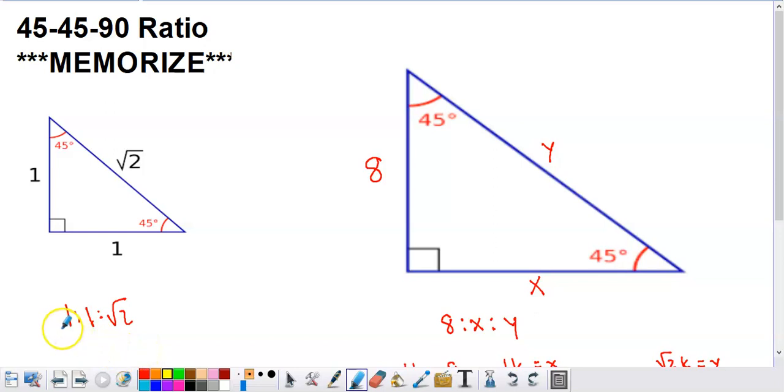So the legs are congruent, right? It's an isosceles triangle, so the legs have the same measure, and then the hypotenuse is going to be whatever the legs are times a factor of square root of 2. So how do we utilize this information? So if you look at this triangle that I have drawn on the right-hand side of the screen,